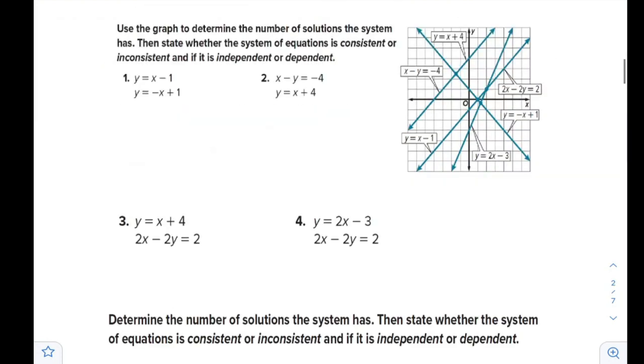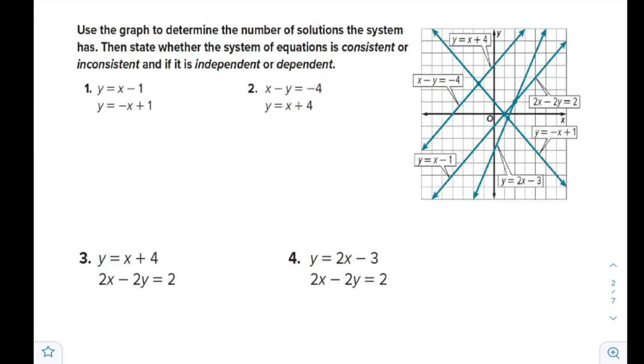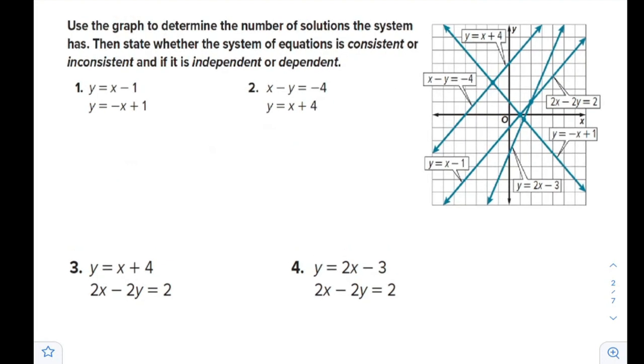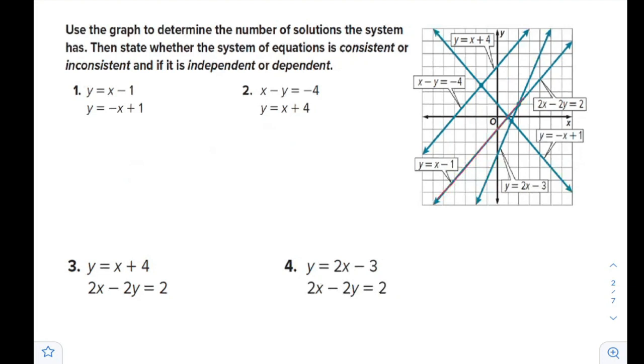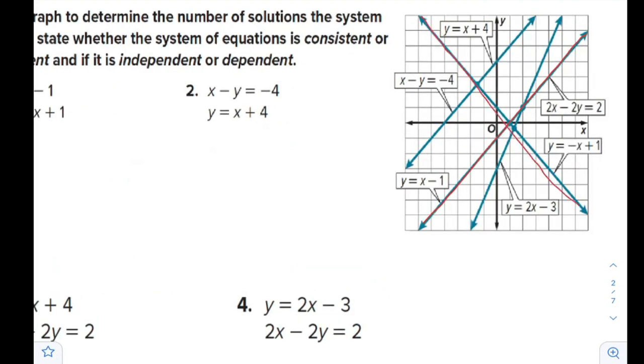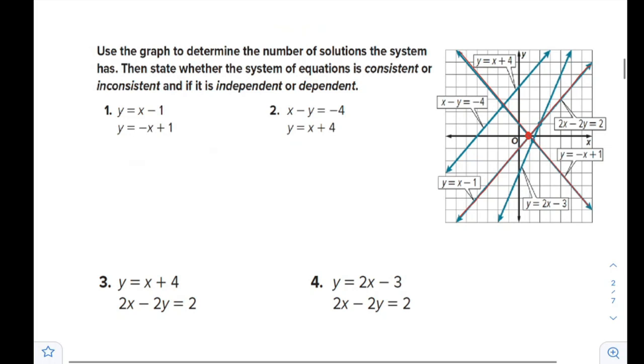Let's move on here and apply our understanding. Use the graph to determine the number of solutions the system has. Question one: y equals x minus 1 and y equals negative x plus 1. It is very clear that they are crossing each other, meeting at one point. That means we have one solution. The system is consistent and independent.